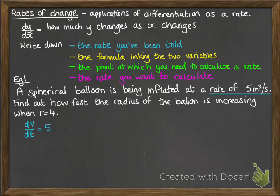Next, we want the formula that links the two variables. Now the variables we're talking about are volume and radius. So for that, we need to have the formula for the volume of a sphere. Next we want the point at which we have to calculate the rate. So we're told to do it when the radius is 4.